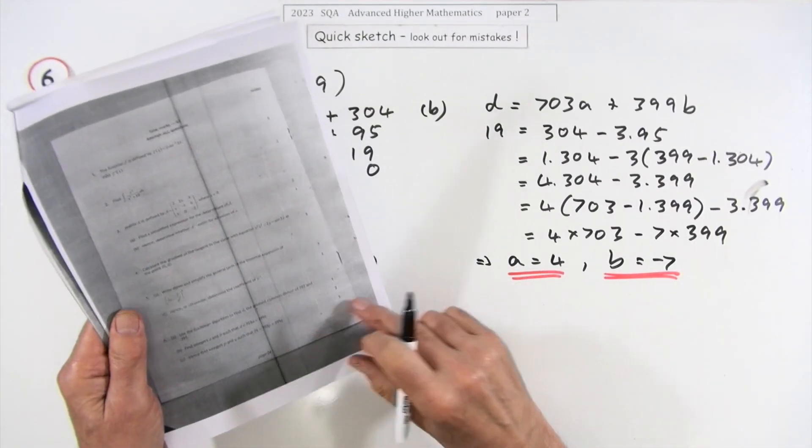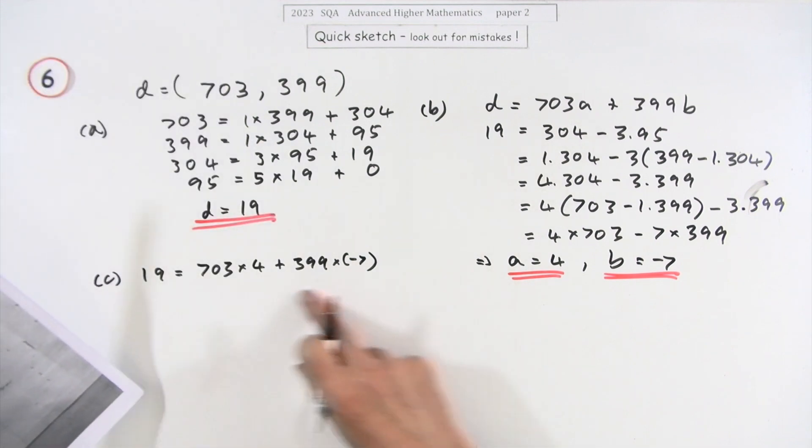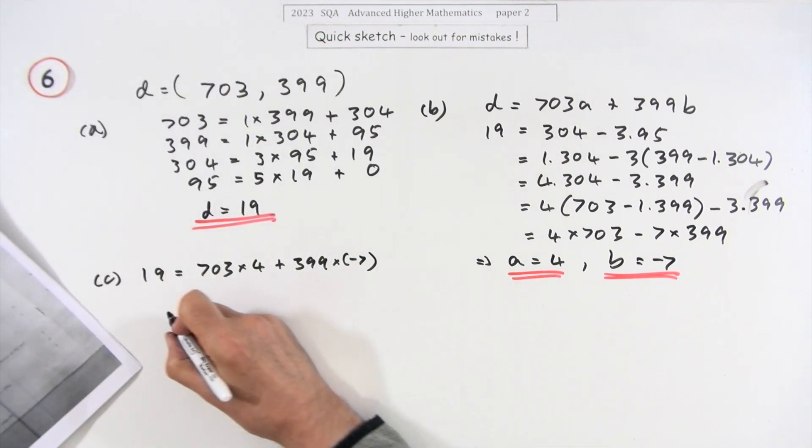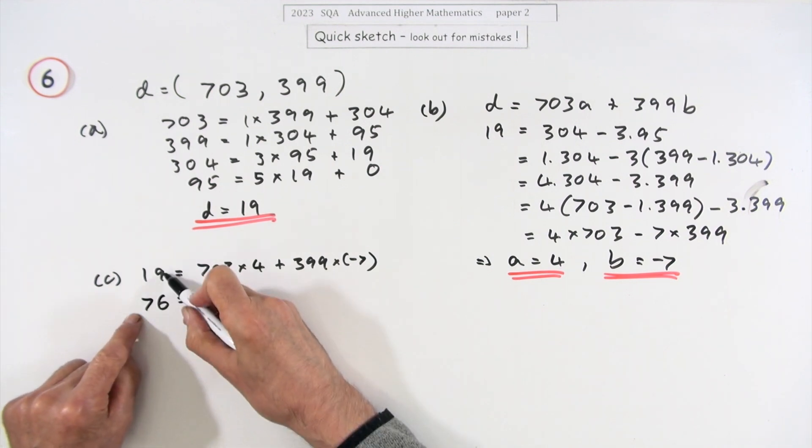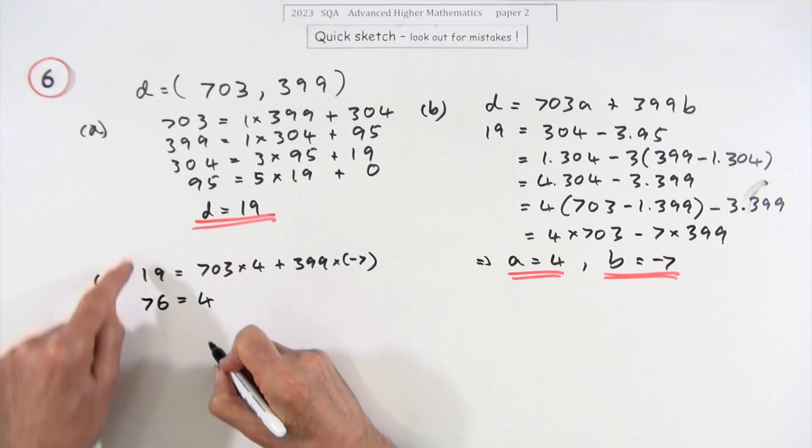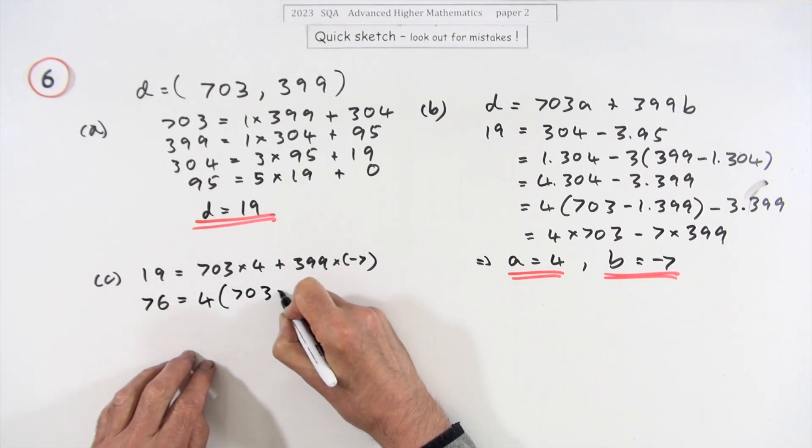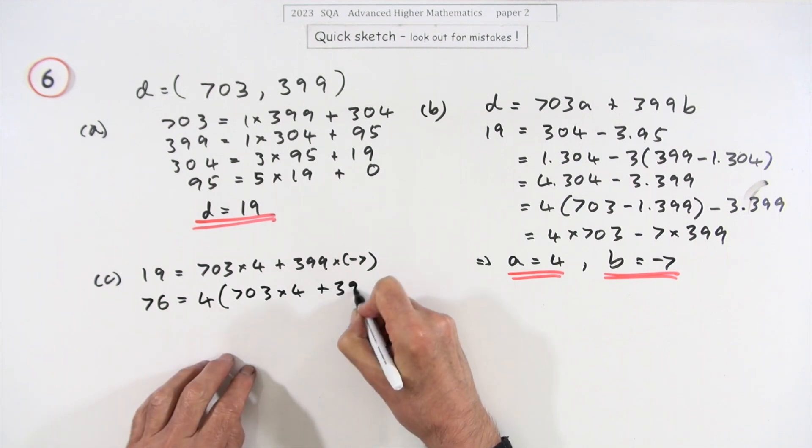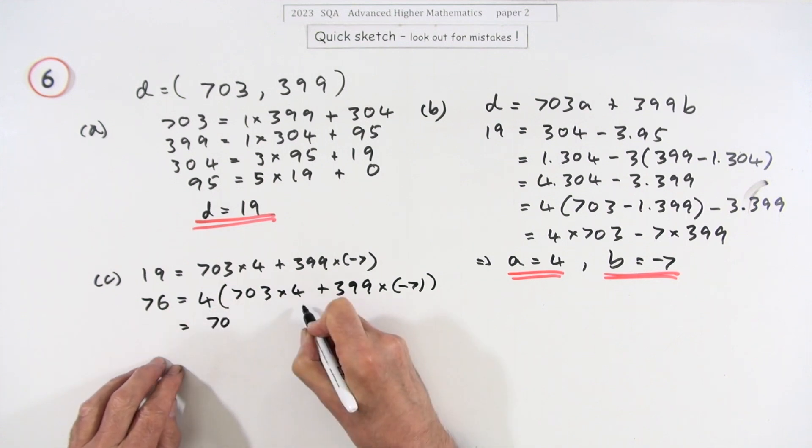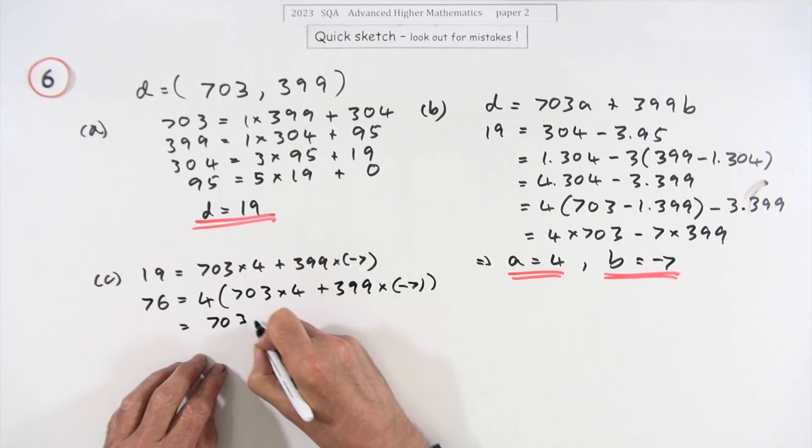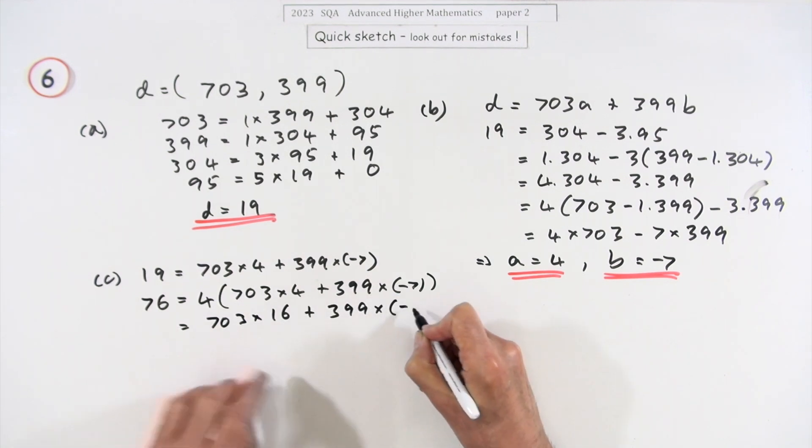Now the last part for one mark says hence find integers p and q such that 76 equals this. So I'm looking for 76, well 76 is four times that, so four times that would be four times this, I'll just put it down.